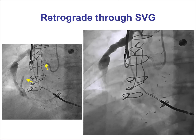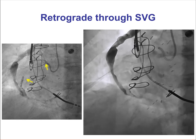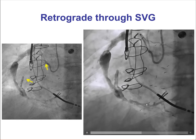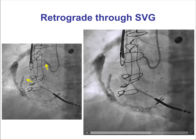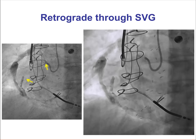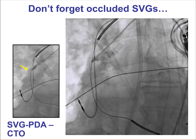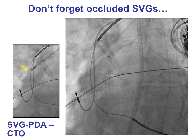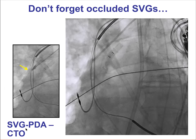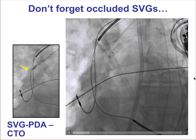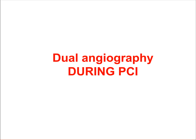We should not forget the vein grafts. This is an example of a degenerated vein graft supplying the right coronary distal to a CTO. We should also not forget the presence of occluded vein grafts, which can sometimes serve as collateral avenues when trying to cross a CTO.